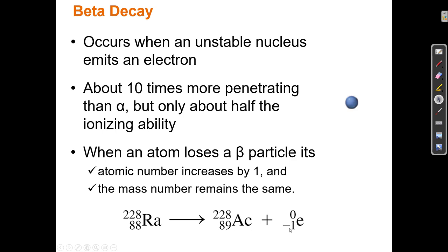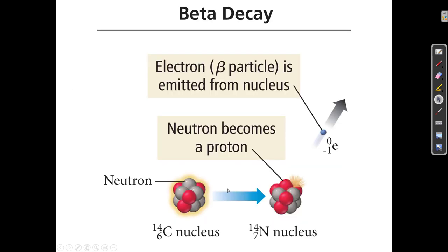The numbers have to be conserved. If I have 88 protons and then 89 protons, in order for the numbers to balance I need to put minus one on the other side — and the particle with a negative-one charge is an electron, which has zero mass. So the atom still has 228 mass units. For carbon-14, which has six protons and eight neutrons, when a neutron becomes a proton I still have 14 particles, but now there are seven protons and seven neutrons — that's nitrogen-14.